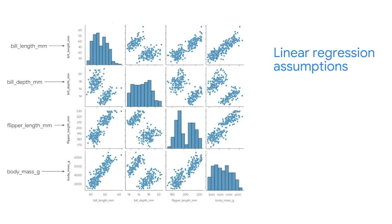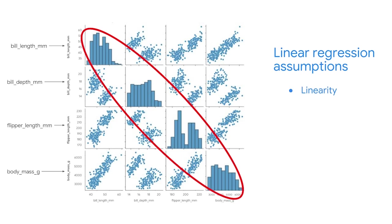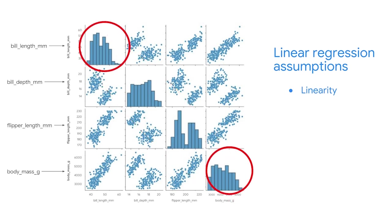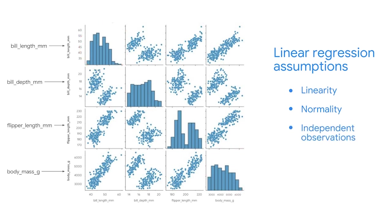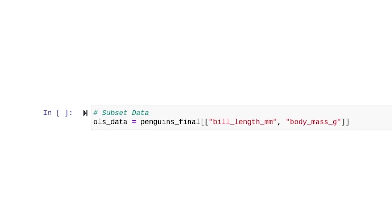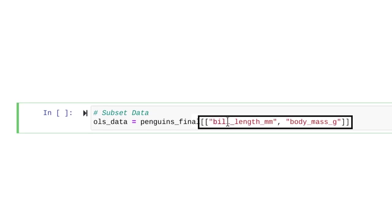Let's explore the relationship between bill length and body mass further in terms of linear regression assumptions. We know we have met the first linear regression assumption of linearity. The diagonal of the pair plots also shows the distribution of each variable. We can observe that both bill length and body mass are close to being normally distributed, which suggests that we'll probably have normally distributed residuals. The third assumption is independent observation. Since each row has data on a different penguin, we have no reason to believe that one penguin's bill length or body mass is related to any other penguin's. We can confirm the last assumption, homoscedasticity, after we build our model when we graph the residuals.